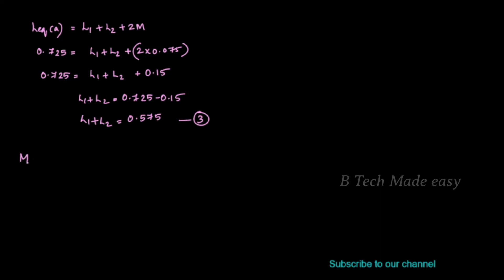We have the mutual inductance equation: M equals K multiplied by the square root of L1 times L2. This gives the relationship between the coefficient of coupling and the inductances.